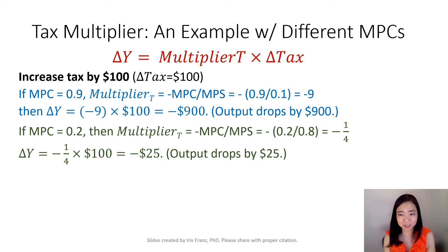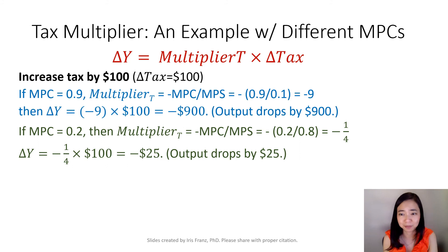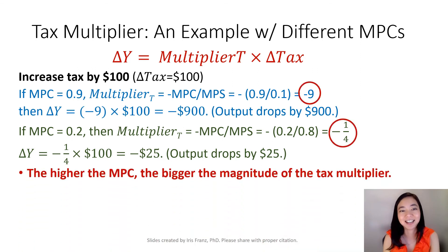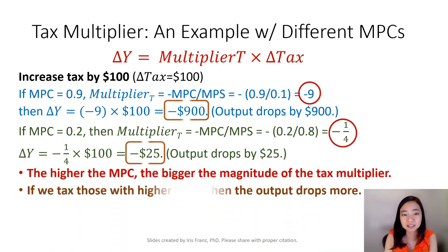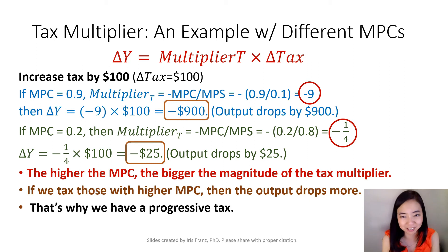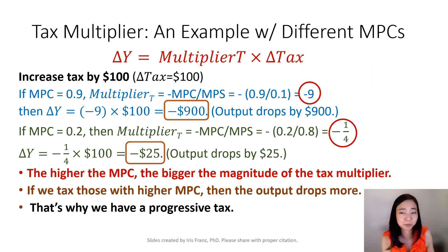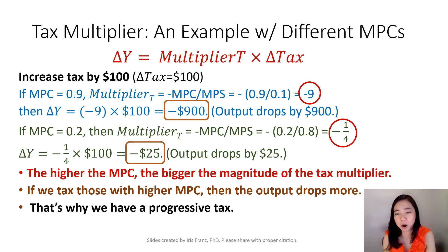You can see a big difference: if MPC is large, output drops by $900, but if MPC is small, output drops by only $25. This is the main reason why we typically have progressive taxation. Because the higher the MPC, the more output drops. So you don't want to tax poor people heavily — you prefer to tax the rich, because taxing the rich does not have such a large negative impact on output.